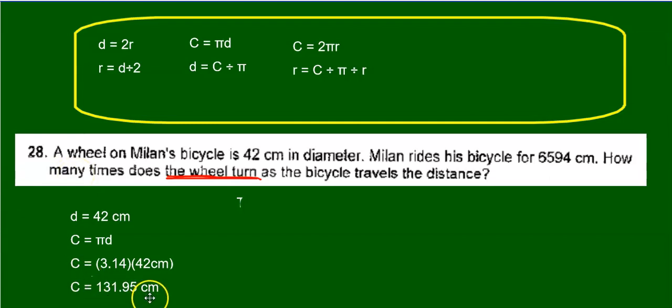this is how much the bike will travel. That's how much it will move. So if the bike traveled 6,594 centimeters, how many turns did it make? So we just have to divide.